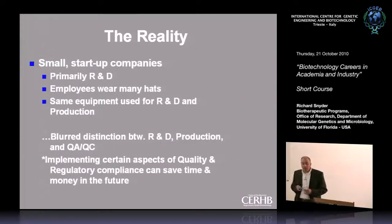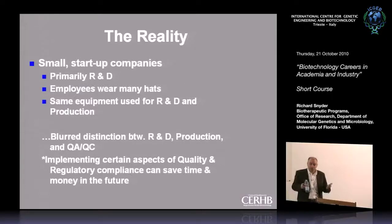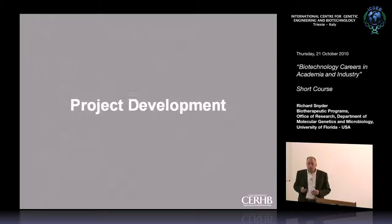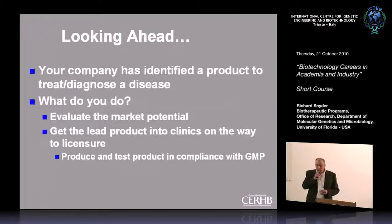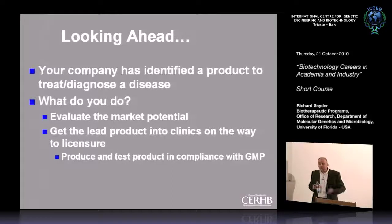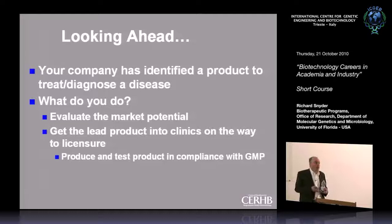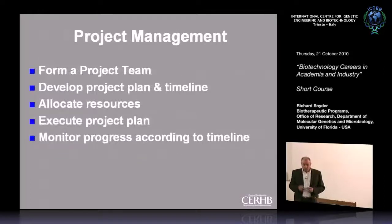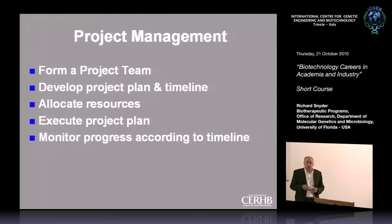Small start-up companies and academia require employees to wear many hats, and as long as the checks and balances are maintained, everything should be in compliance. To develop a project, you've identified a lead to treat a disease. As a company you evaluate market potential; as an academic you don't necessarily have to. You want to get that lead product into the clinic on its way to licensure. You form a team, develop a project plan and timeline, allocate resources, and execute that plan while monitoring progress.